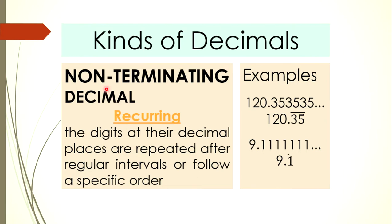Another type is what we call the recurring, non-terminating decimal. In this type, the digits at the decimal places are repeated after regular intervals — it follows a specific order. For example, 120.353535... — as you can see, 35 is being repeated. Therefore, we can write that as 120.35 with a bar on top, what we call the vinculum.